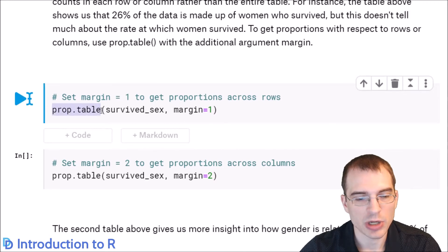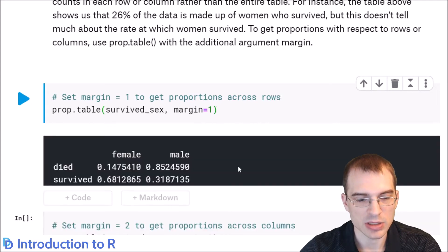If you set prop.table and the margin equal to 1, you'll just get the proportions summed across the rows. So I'll run that, and we can see now that everything is being summed across the rows which has died and survived. So that's telling us that 85% of those who died were males and 14% were females. Conversely, 68% of those who survived were female and 31% of those who survived were male.